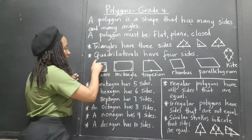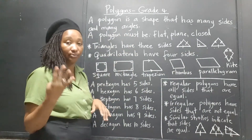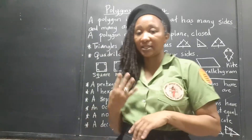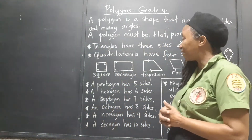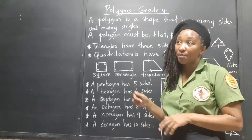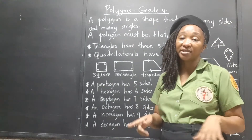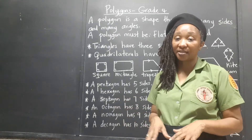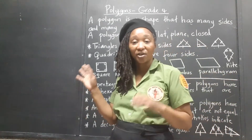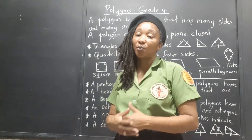Quadrilateral — 'quad' indicates four. There are several types of quadrilaterals, and I think I'm going to dedicate a special video just for them, just like I'm doing for triangles.